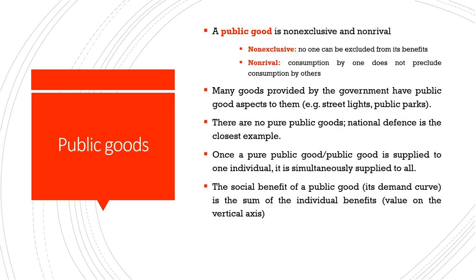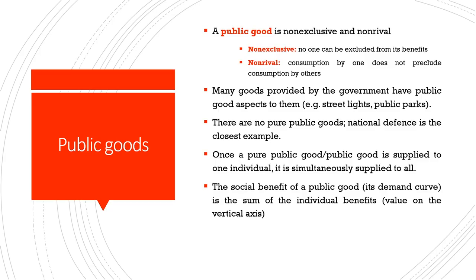Let me begin with the three slides that we ended with in the last class. We defined a public good as something which is non-exclusive and non-rival. Non-excludable or non-exclusive basically refers to the fact that no one can be excluded from the benefits of the good once it has been provided.